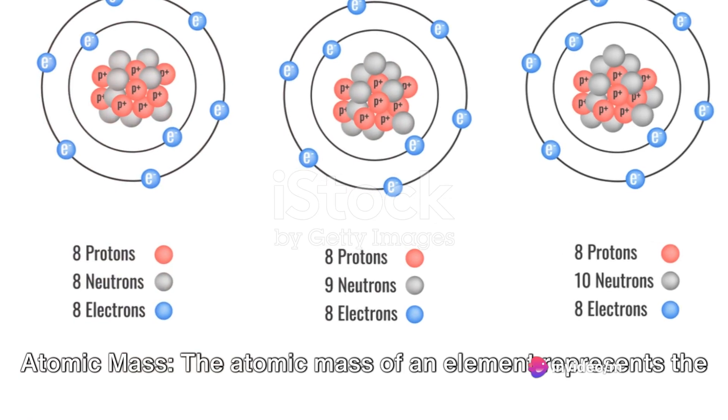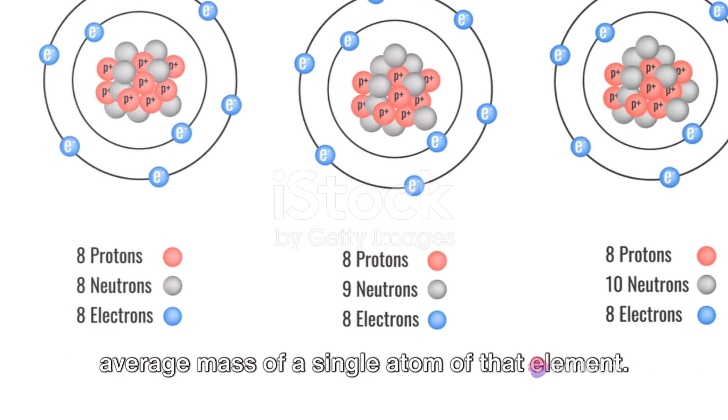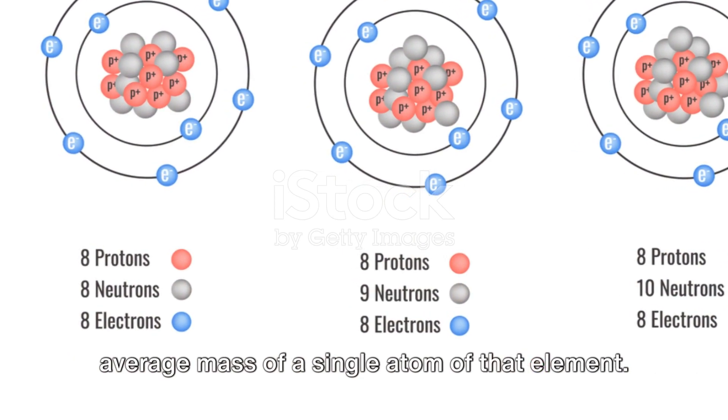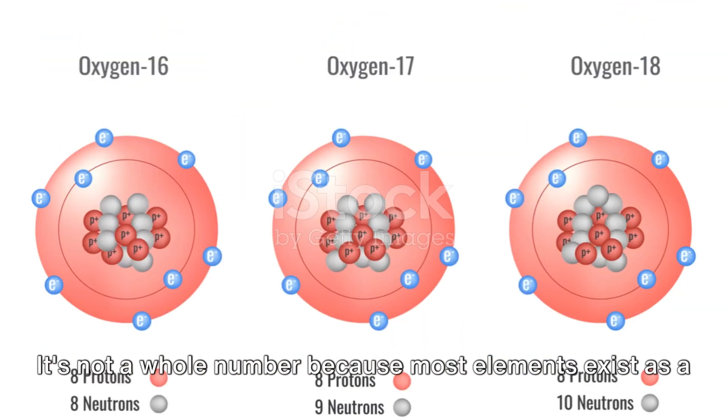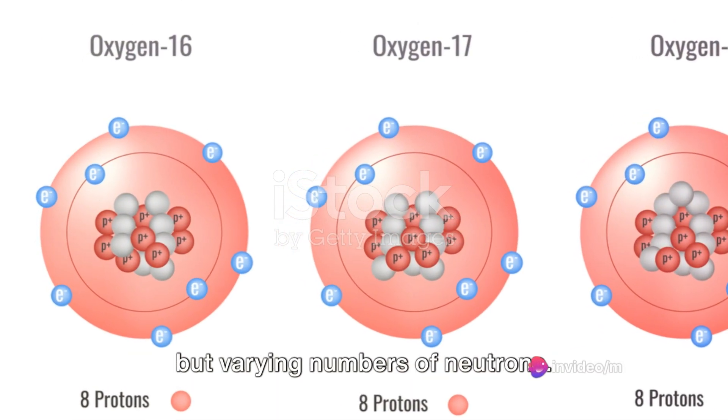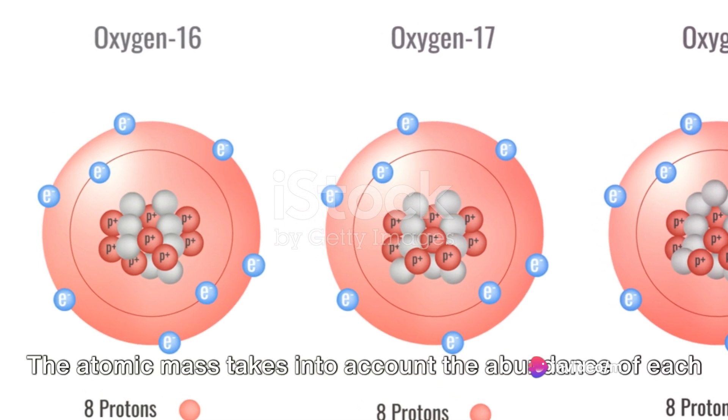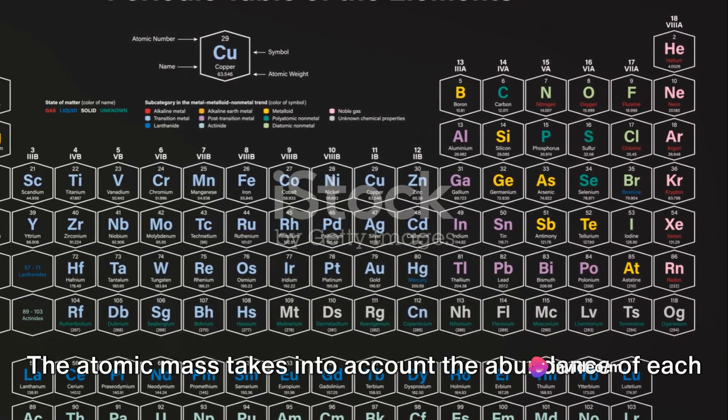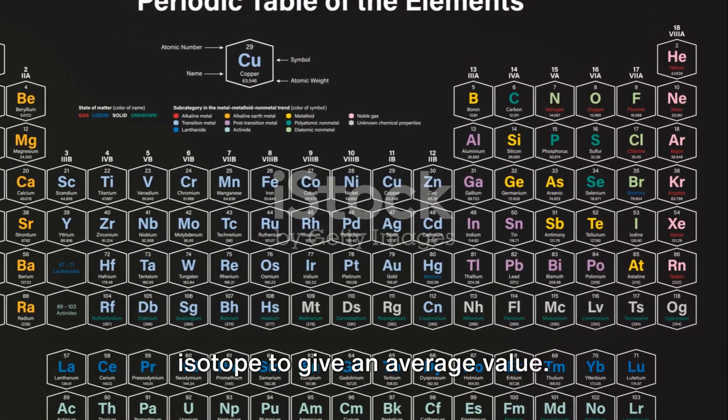Atomic mass. The atomic mass of an element represents the average mass of a single atom of that element. It's not a whole number because most elements exist as a mixture of isotopes. Atoms with the same number of protons but varying numbers of neutrons. The atomic mass takes into account the abundance of each isotope to give an average value.